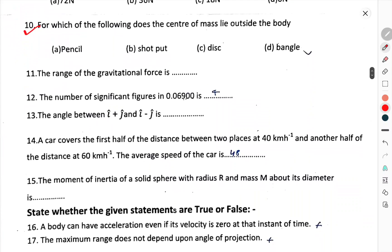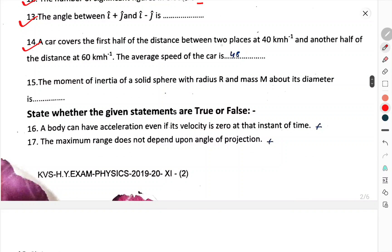Question number 10. For which of the following does the center of mass lie outside the body? Question number 11. The range of the gravitational force is. Question number 12. The number of significant figures in 0.69000 is. The angle between i cap plus j cap and i cap minus j cap.